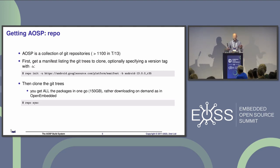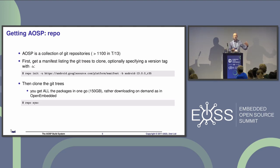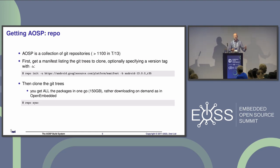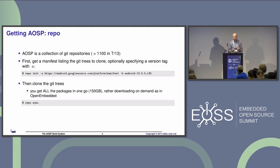Then you do `repo sync`, which iterates through the manifest and does essentially a Git clone for each of those 1,100 trees. It's going to take a while — in Android 13, it's about 150 gigabytes to download. Notice the contrast with BuildRoot and Yocto, where it downloads on demand as it builds each module. With AOSP, you get everything in one go, including BSPs for things you may never touch — that's one reason it's so big.